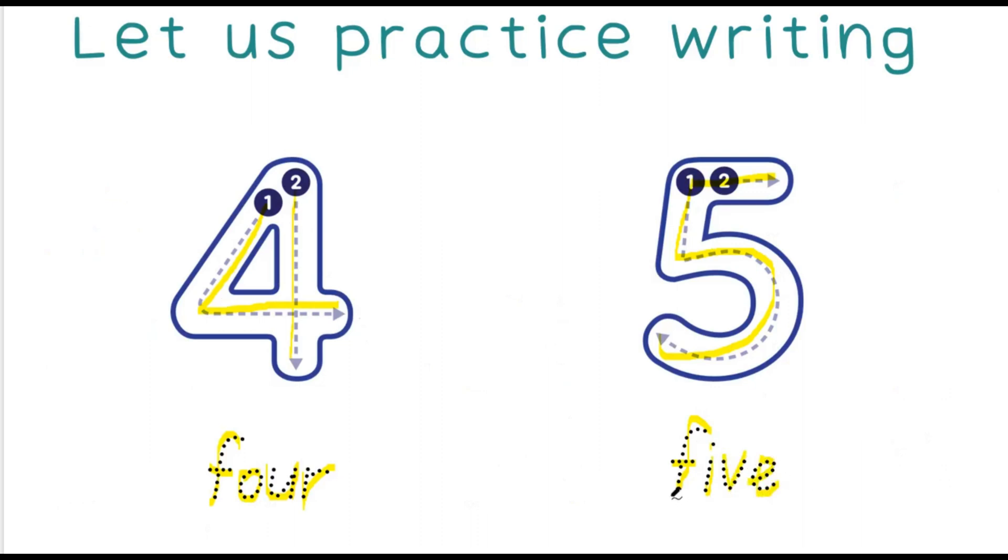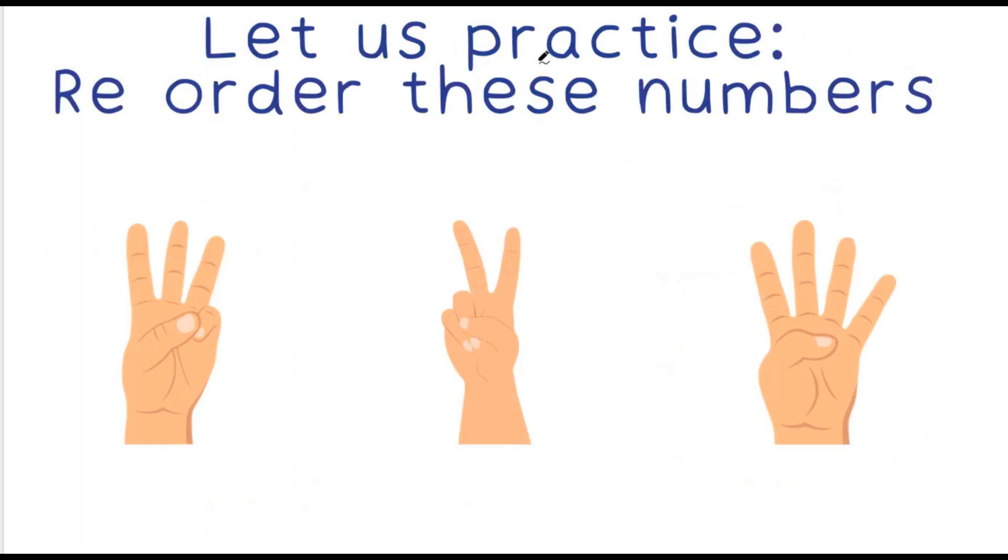Let us practice. Re-order these numbers. How many fingers do you see on each hand? 1, 2, 3. 1, 2. 1, 2, 2, 3, 4. So remember we will re-order these numbers from biggest to smallest or smallest to biggest. That is how we put numbers in order.